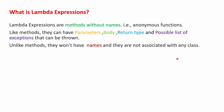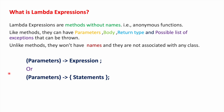The syntax for lambda expressions is: parameters followed by an arrow symbol, followed by an expression or statements. If we have more than one statement, we use curly braces; if we have a single statement, curly brackets are not needed. Parameters means one or more arguments. If you don't have any arguments, empty brackets will be there.